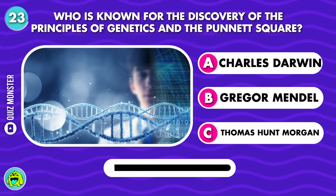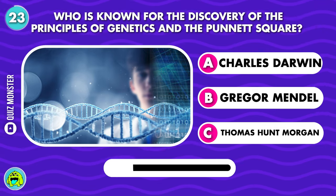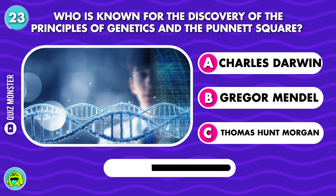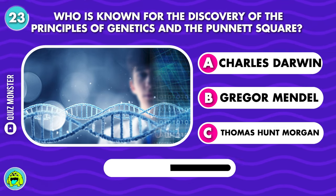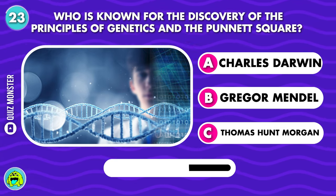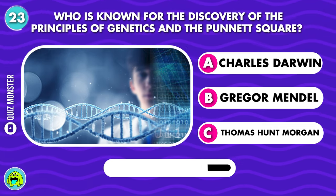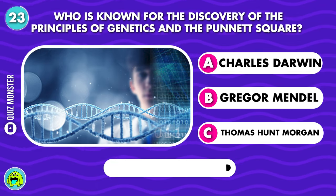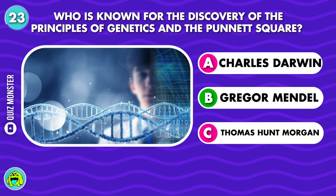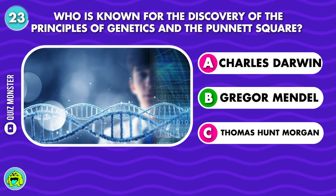Who is known for the discovery of the principles of genetics and the Punnett square? Gregor Mendel.